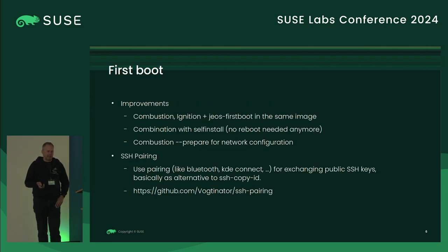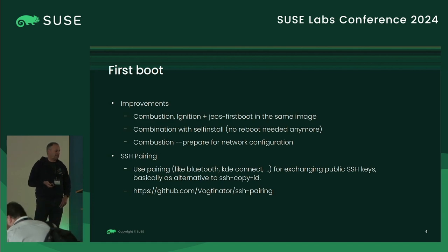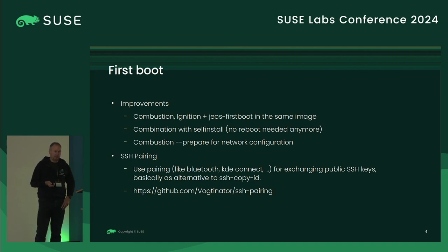Other improvements: combustion, ignition, and first boot are now in the same image, so that if you forgot your combustion ignition disk, you don't end up at a root prompt where you cannot log in. If no config is provided, first boot will set the password and everything else. We also combined that with a self-installed image to make it more user-friendly. We enhanced combustion to be able to set the network already in the initrd correctly.